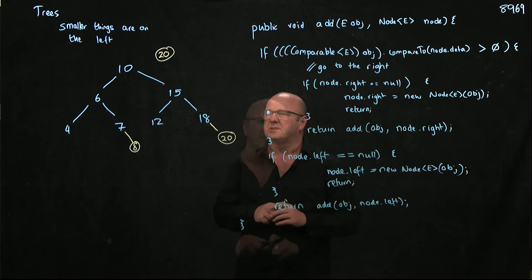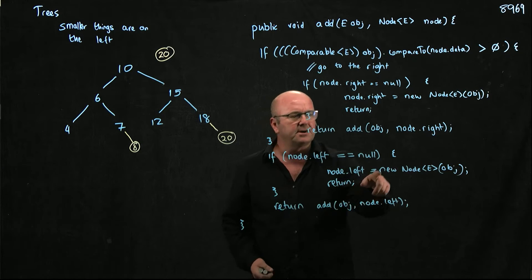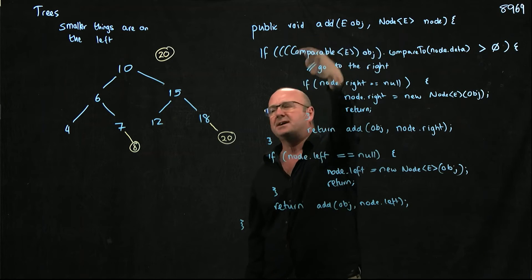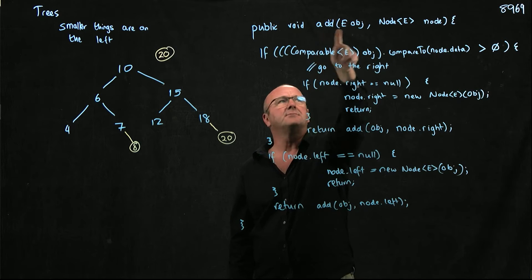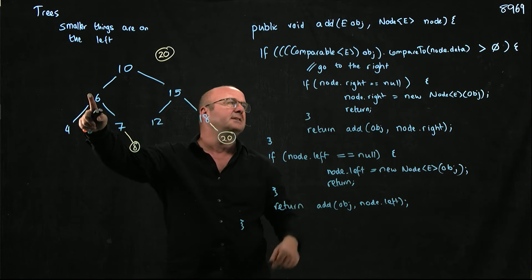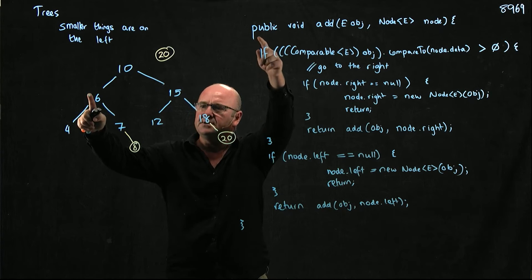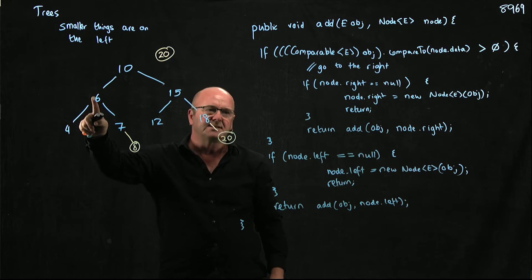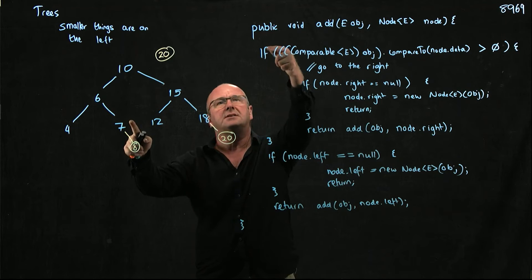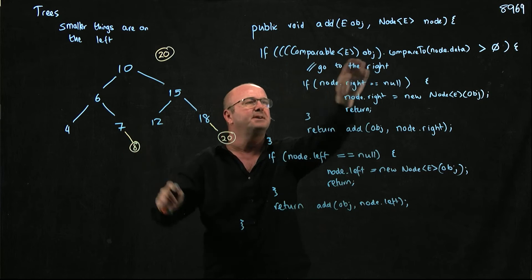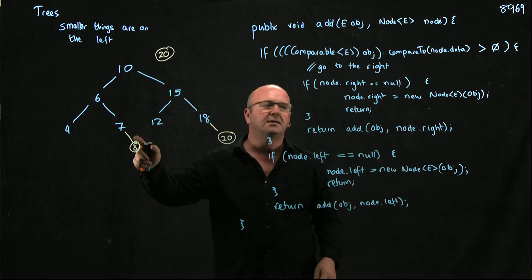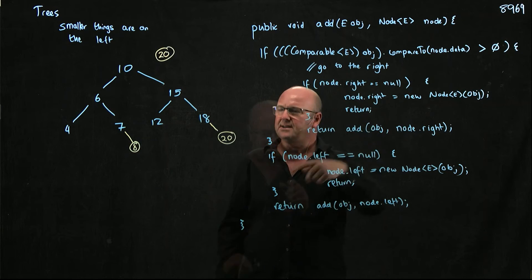This recursive add method goes down and finds the right place. When adding an 8: we compare 8 to 10 and go left; recursion brings us back to the top, we compare 8 to 6 and go right; we call ourselves again, compare 8 to 7, and try to go right — but 7.right is null, so that's where we add the 8.